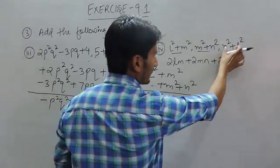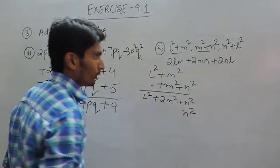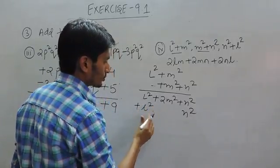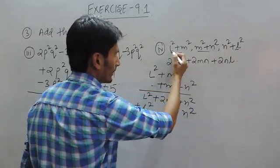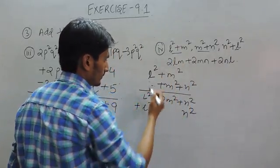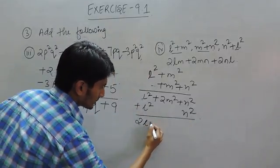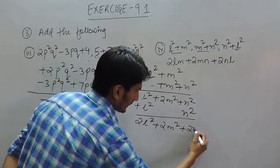In this we can add this term. So N square can be written below N square, or plus L square can be written below L square. This is again L and this is also L. Now we can add: L plus L is 2L square plus 2M square plus 2N square.